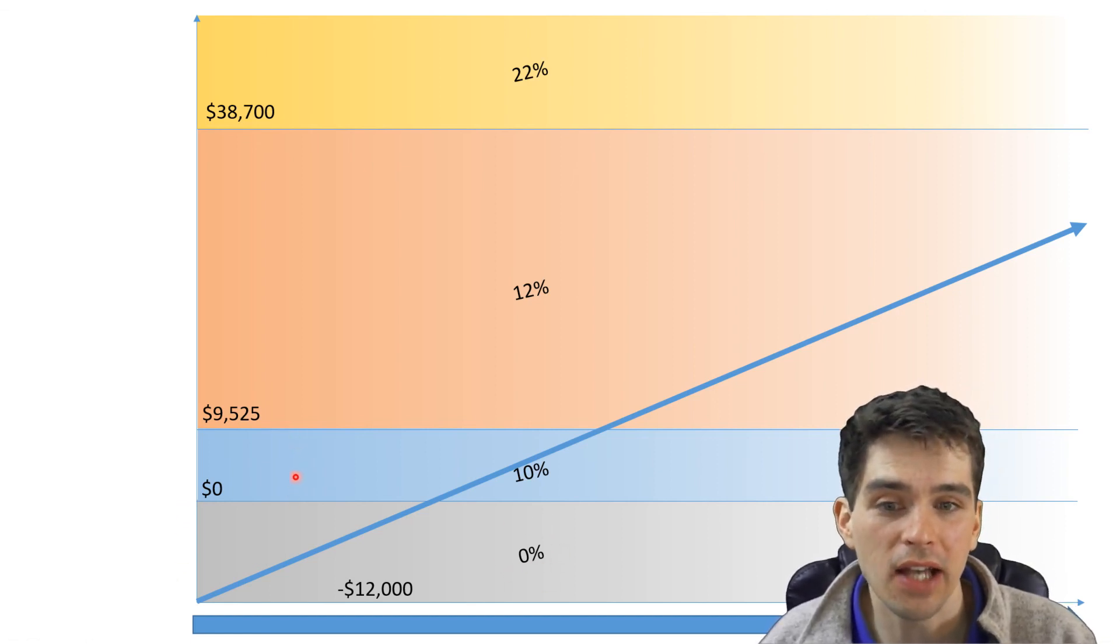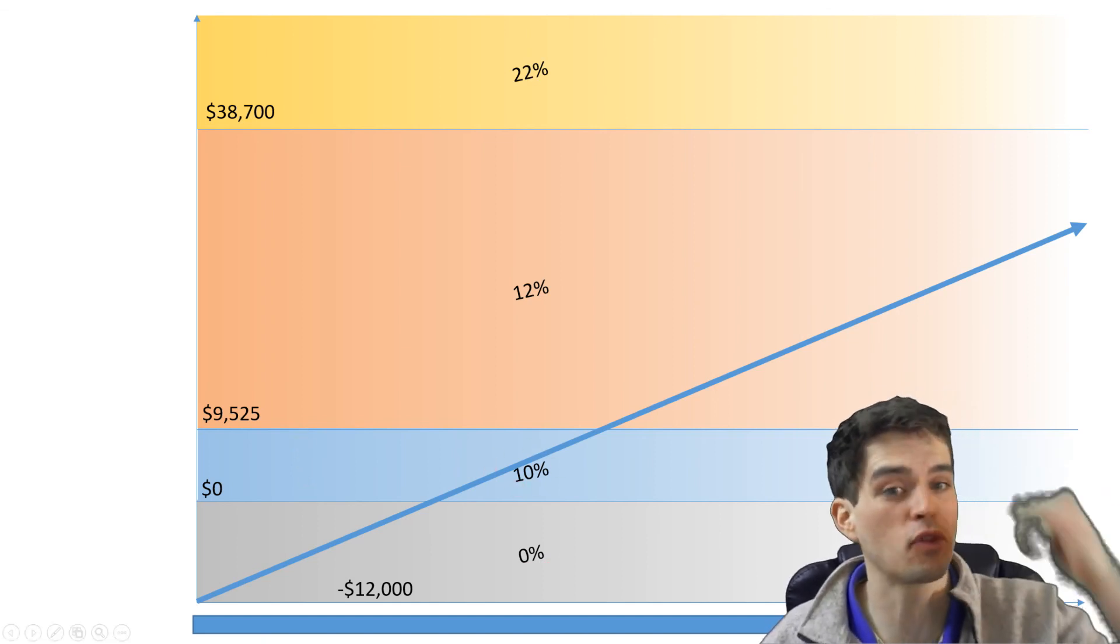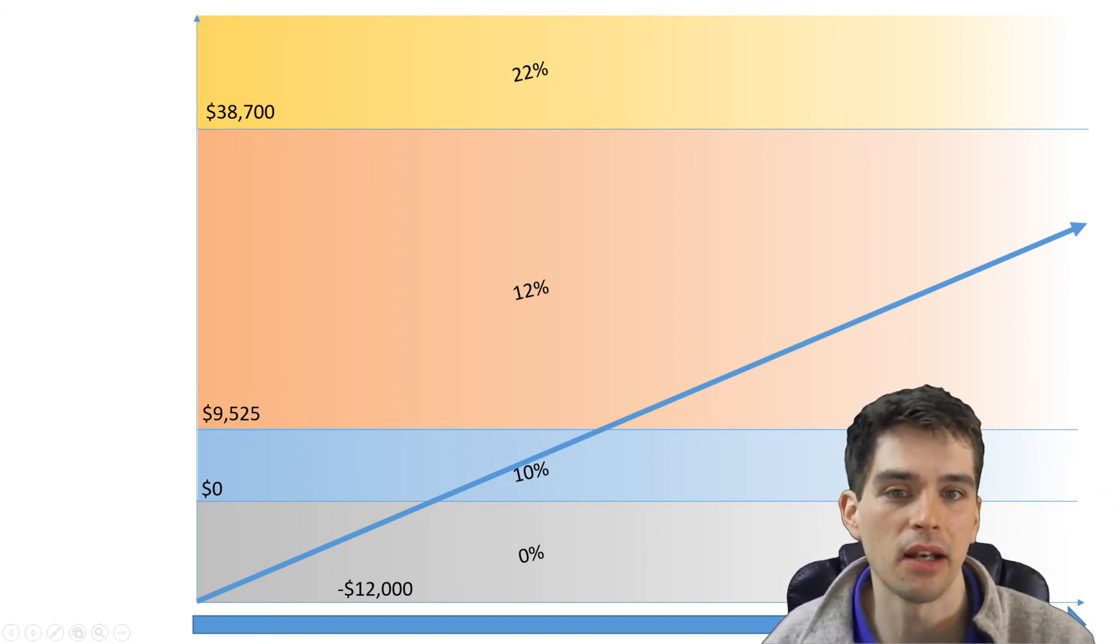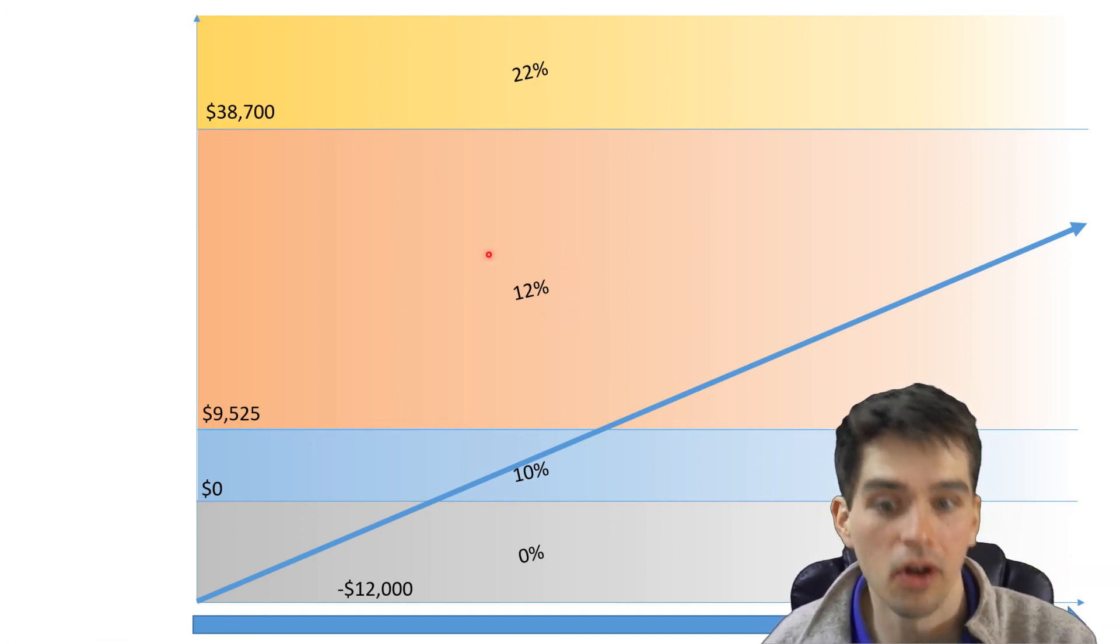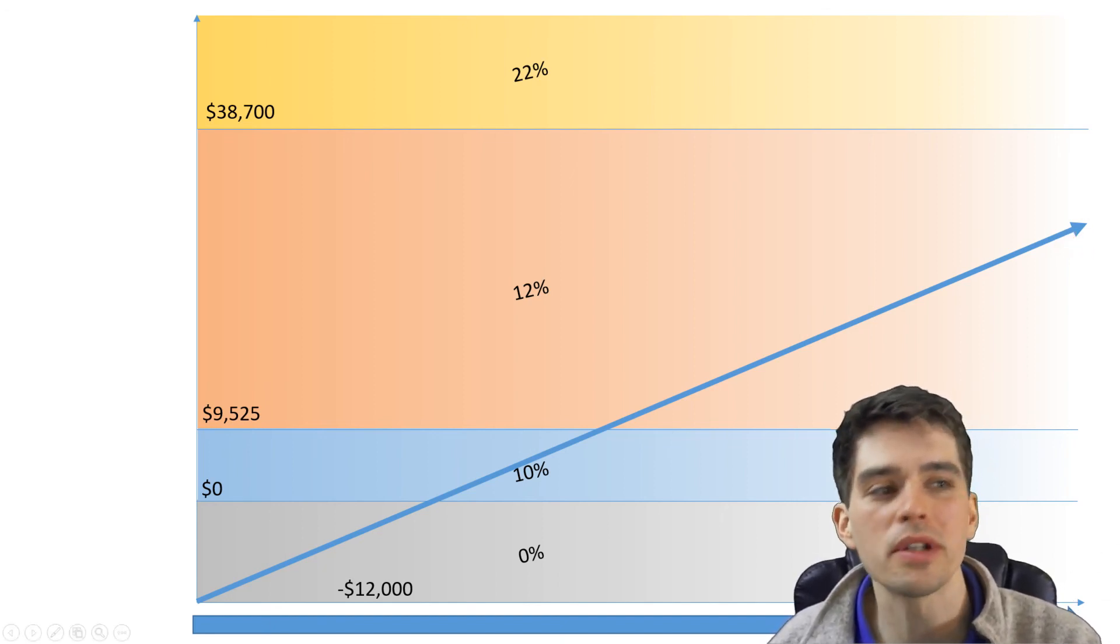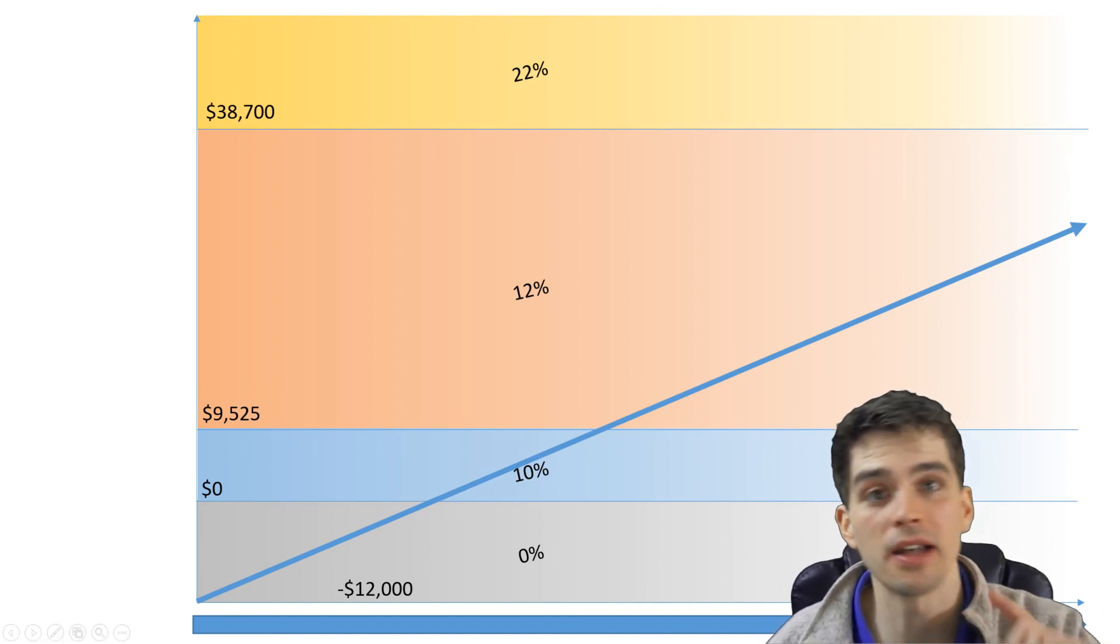And only the $9,525 on top of the $12,000 is taxed at 10%. Then the next chunk up to $38,700 taxable on top of the $12,000 is taxed at 12%.